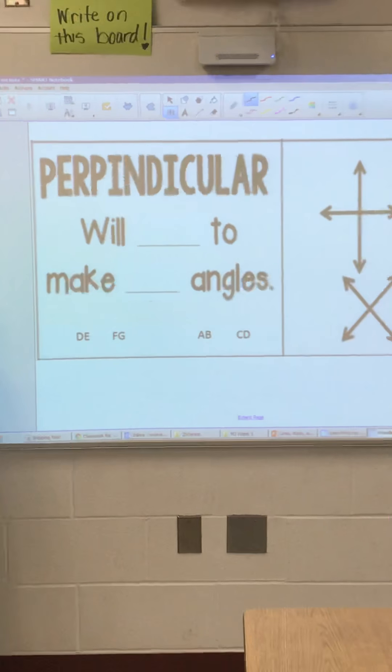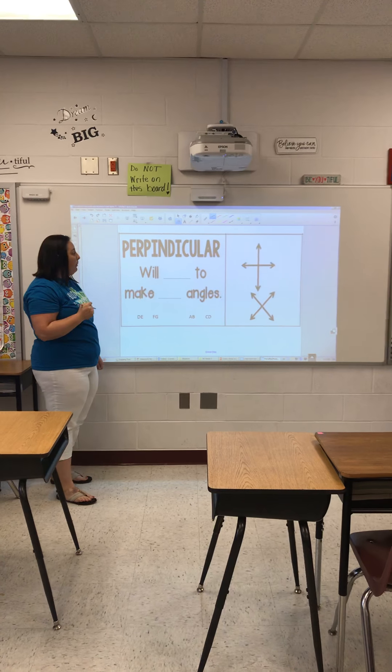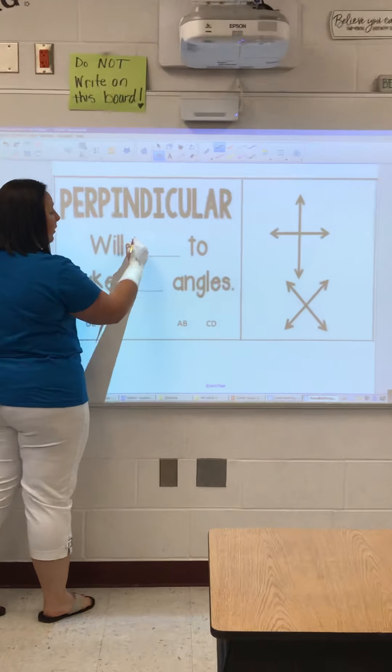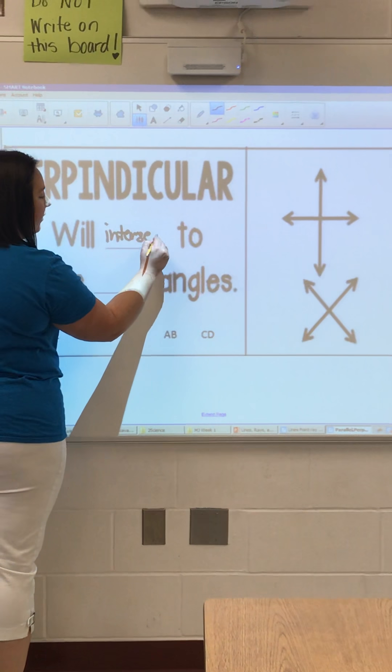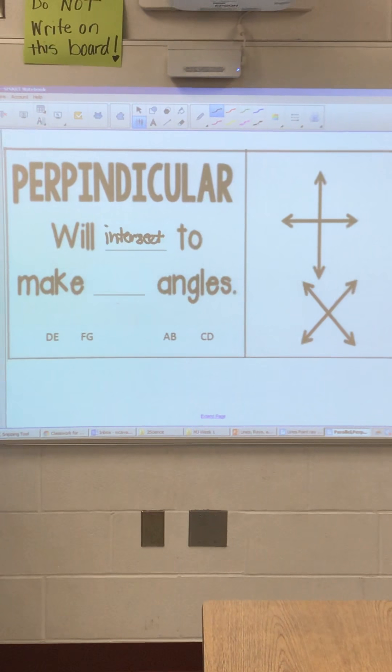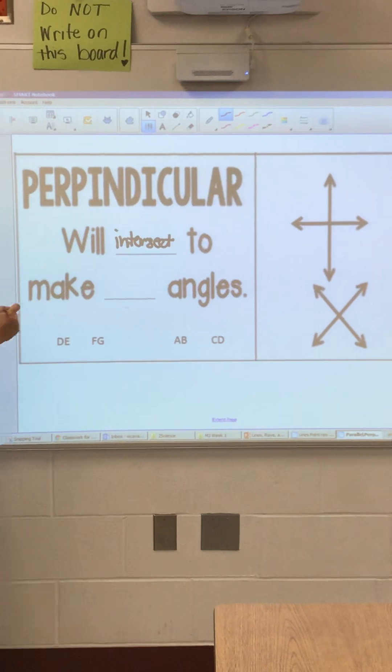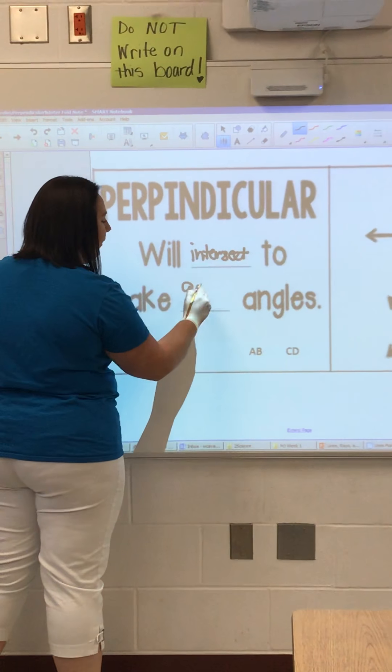Next, we're going to talk about perpendicular lines. Perpendicular lines will intersect. Intersect means to cross to make a 90 degree angle.